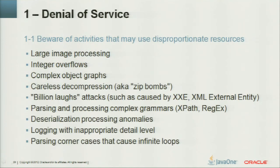What can cause disproportionate resource consumption? Large image processing, integer overflows, complex object graphs, careless decompression, zip bombs, billion-laugh attacks with XML, external entity inclusion, parsing complex grammars with XPath or regex — powerful but with unpredictable parsing times — serialization anomalies, logging with inappropriate detail, and parsing corner cases that may cause infinite loops, like in the double bug.